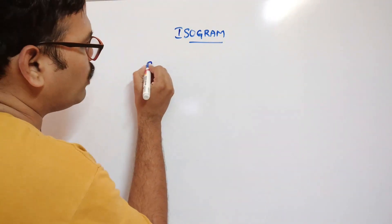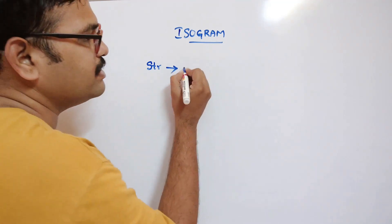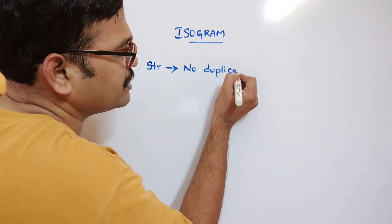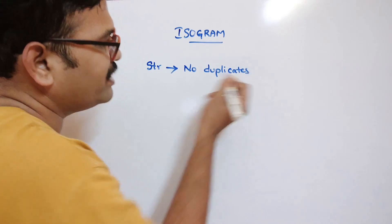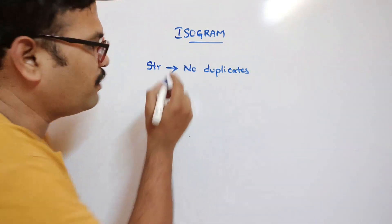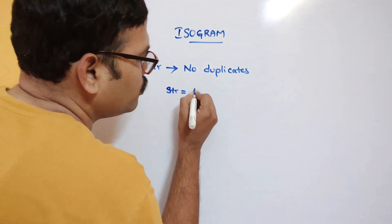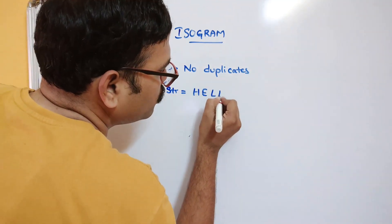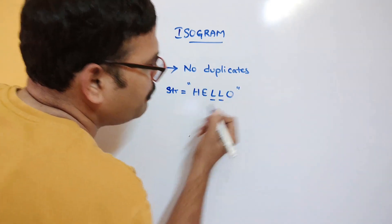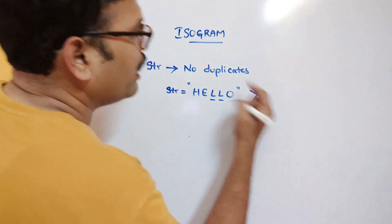Consider a string — if this string contains no duplicate characters, then we can call this string an isogram. For example, if the string is 'hello', you can observe that 'l' is repeated two times, so this is not an isogram.